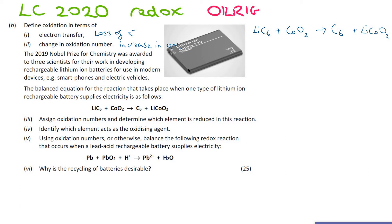When assigning oxidation numbers, go through the video on assigning oxidation numbers — there are several rules we need to use. To start with, each lithium here, because lithium is a group 1 metal, will always give away one electron, so its oxidation number is always plus one. That means for carbon, because there are six carbons and it's the only other element, it gets an oxidation number of minus one-sixth. For cobalt oxide, oxygen won't change — it will be minus two — and with two oxygens, cobalt has to be plus four.